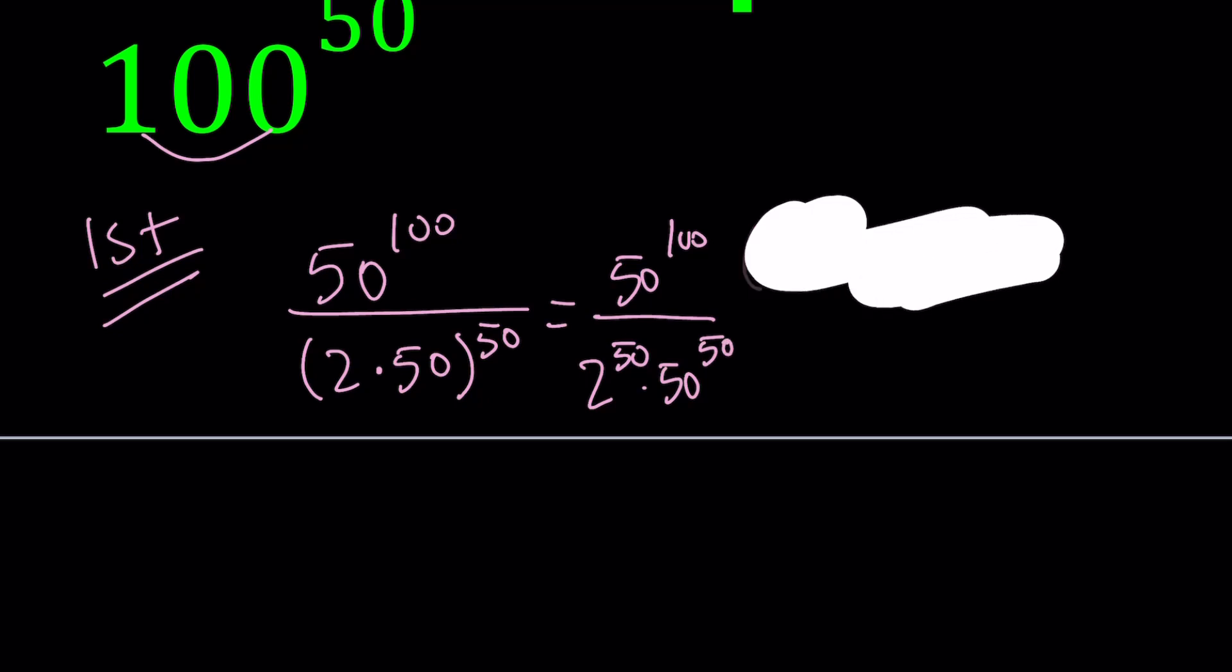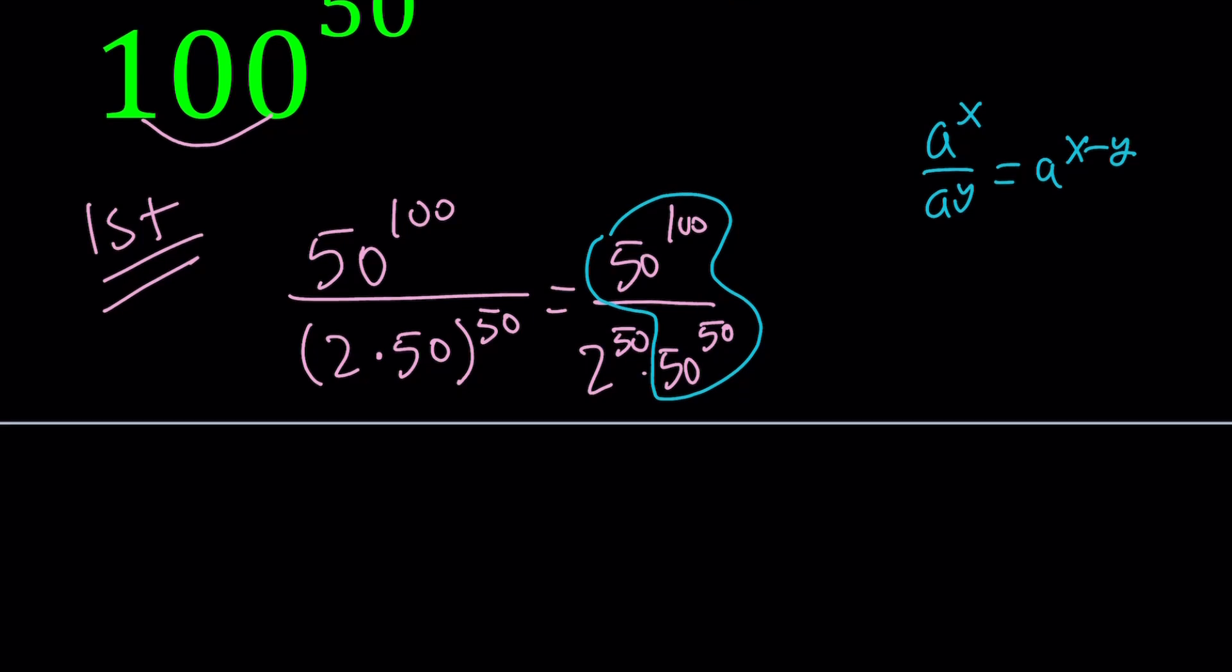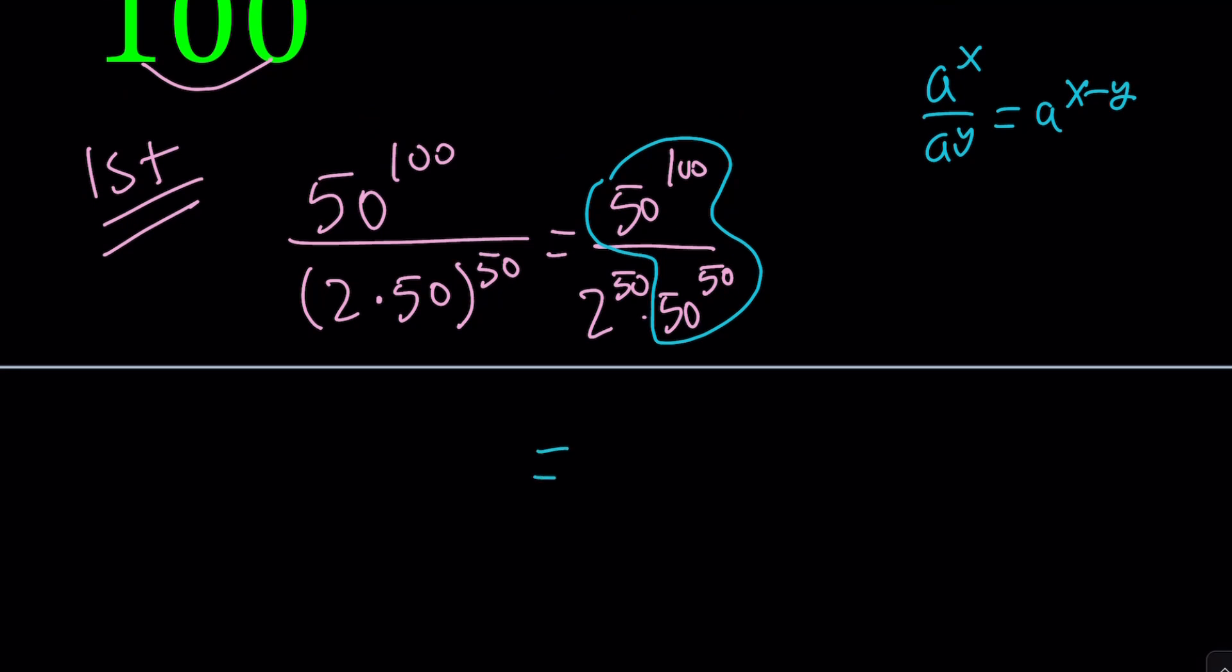And this gives us 50 to the power 100 divided by 2 to the power 50 times 50 to the power 50. Awesome. Now, we have this property that helps us simplify this, but we're going to use other properties. When you divide powers, like a to the x divided by a to the y, you subtract the exponents, a to the power x minus y. I'm planning to make a separate video on properties of exponents. Please let me know what you think.